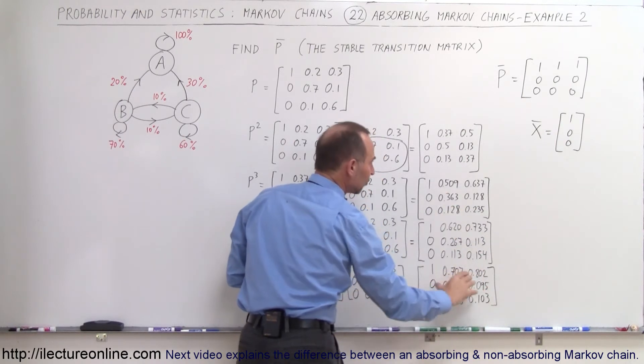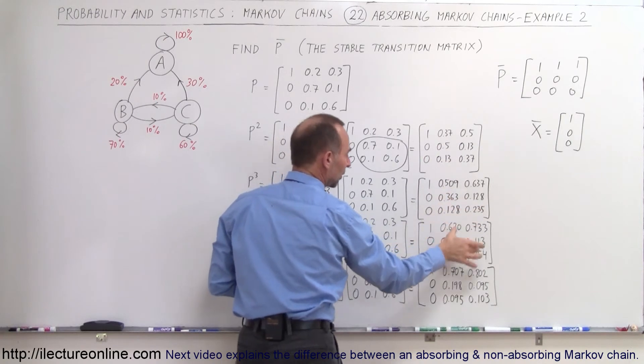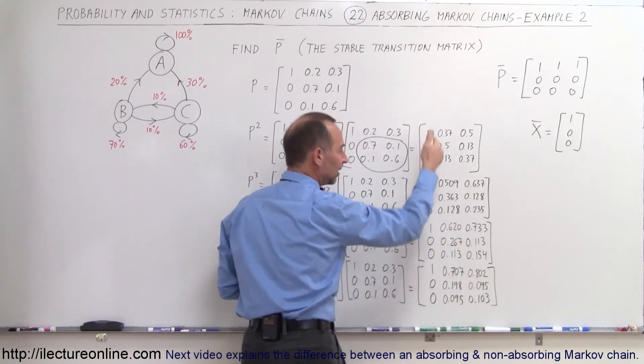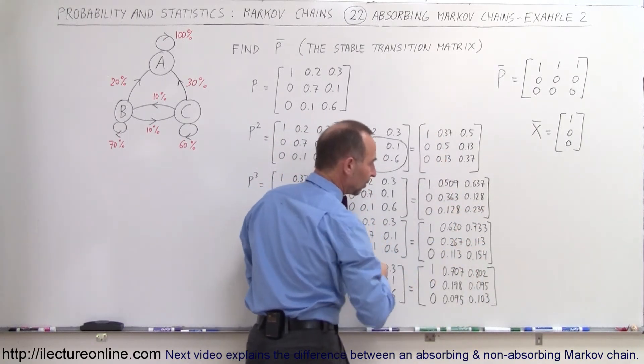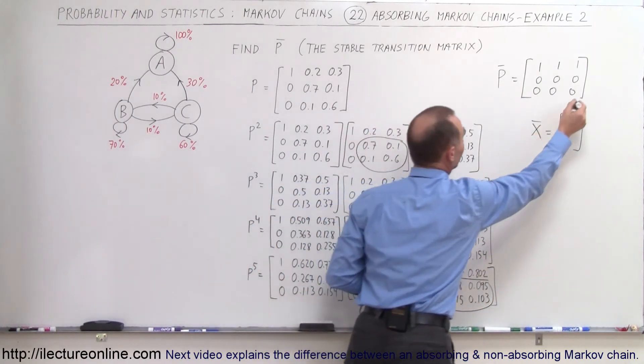And those numbers as well become smaller and smaller and smaller and so on. So you can see that the trend is such that these numbers right here eventually will end up looking like this, and so they all will go to 0.